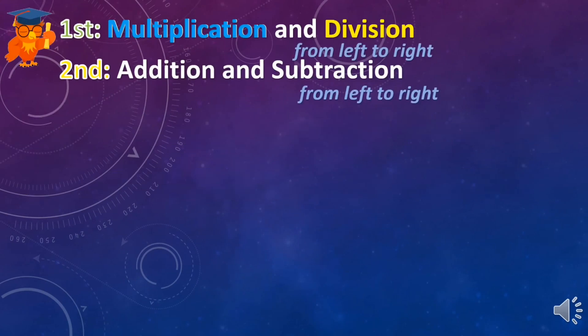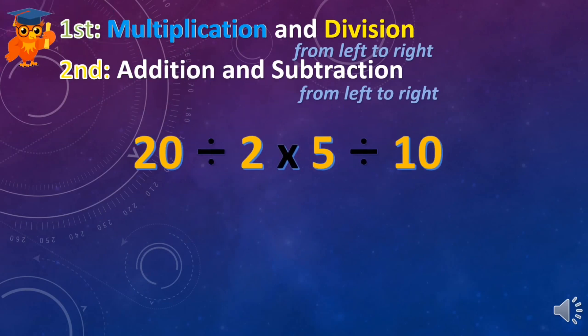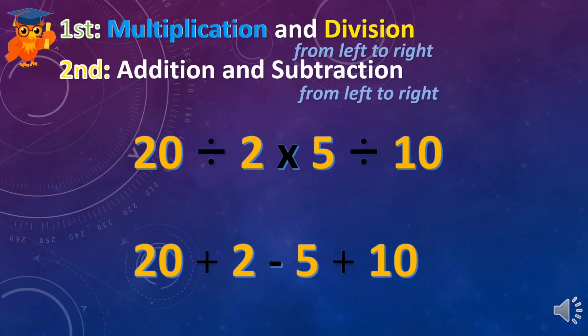The two directions we went made a big difference. So whenever you have a problem that has a mixture of multiplication and division, or a mixture of addition and subtraction, you do the operations in order from left to right.